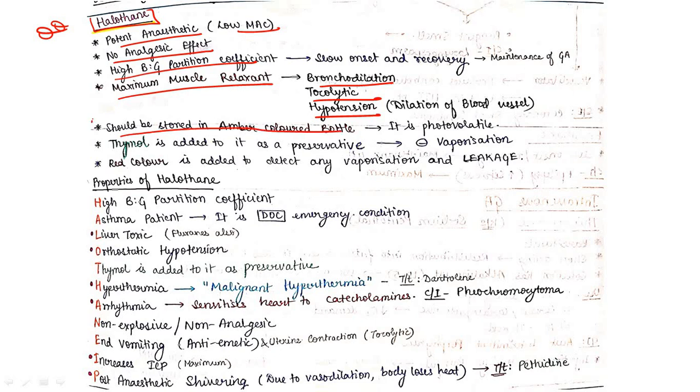Halothane should be stored in amber colored bottle because it is photosensitive. Thymol should be added as preservative which inhibits vaporization. Red color is added to detect any vaporization and leakage. These three points you must remember about halothane.